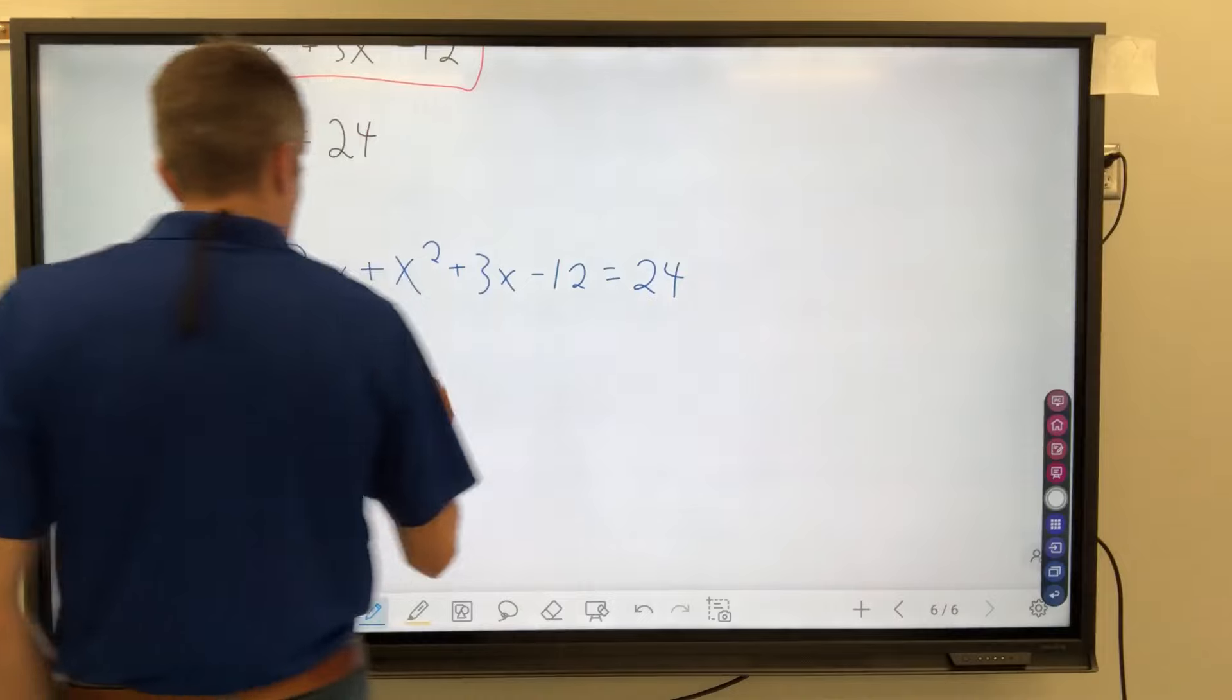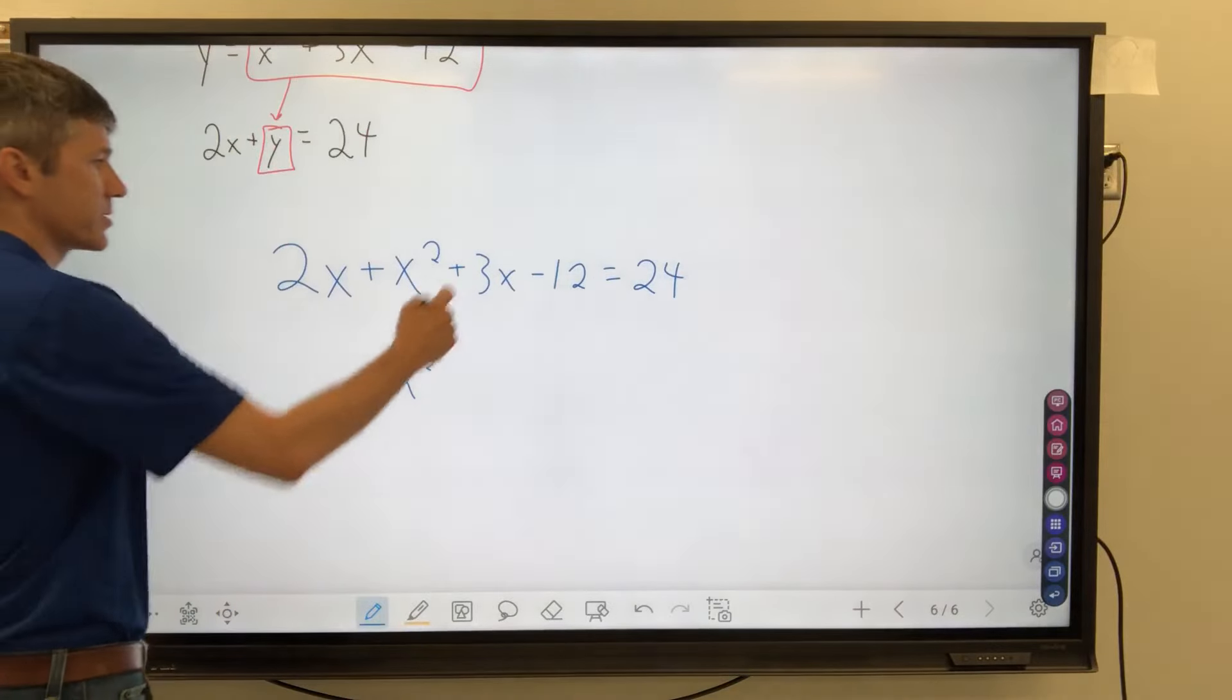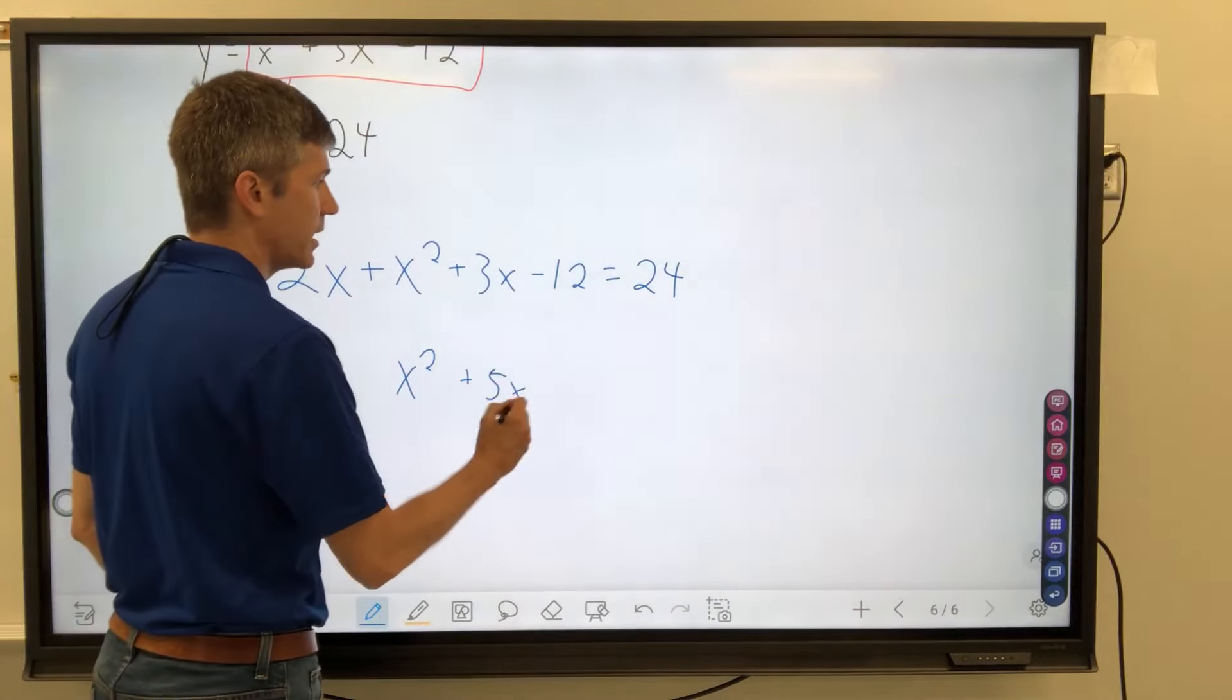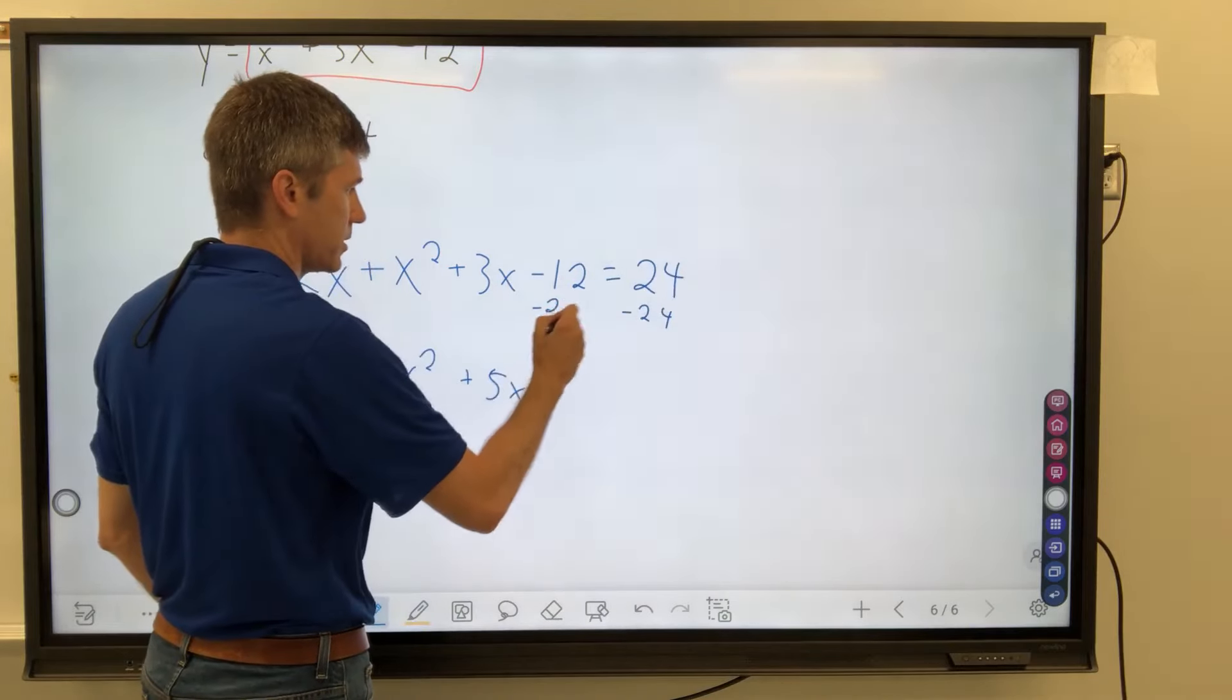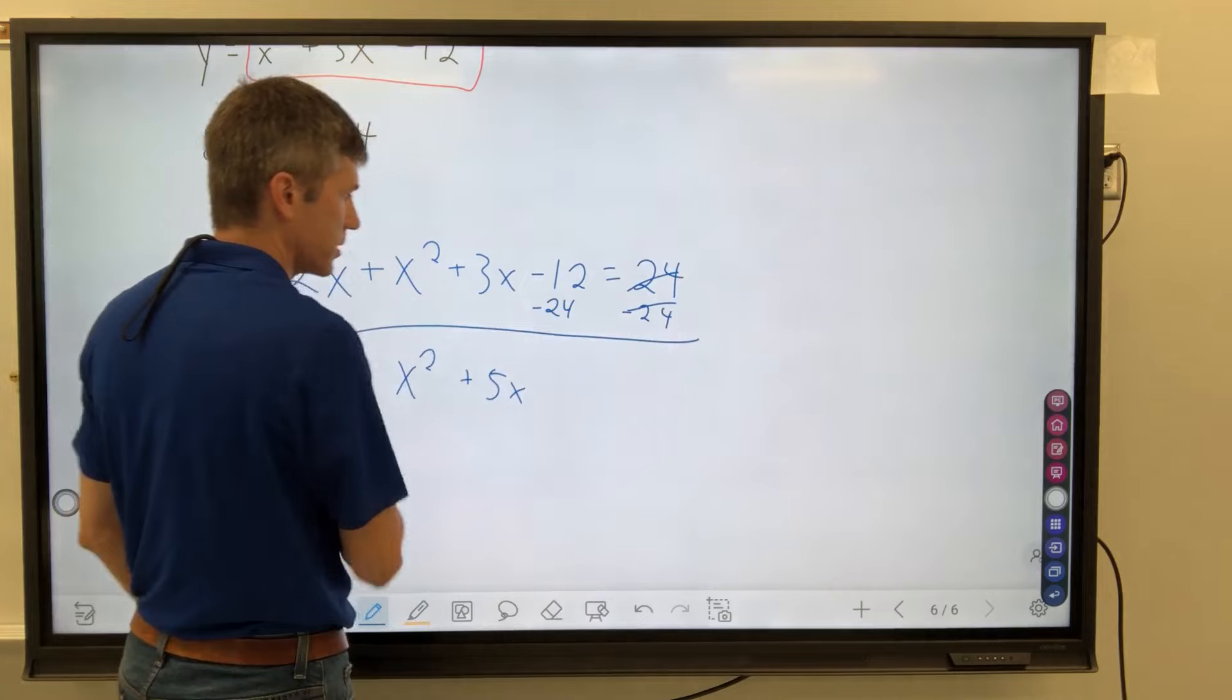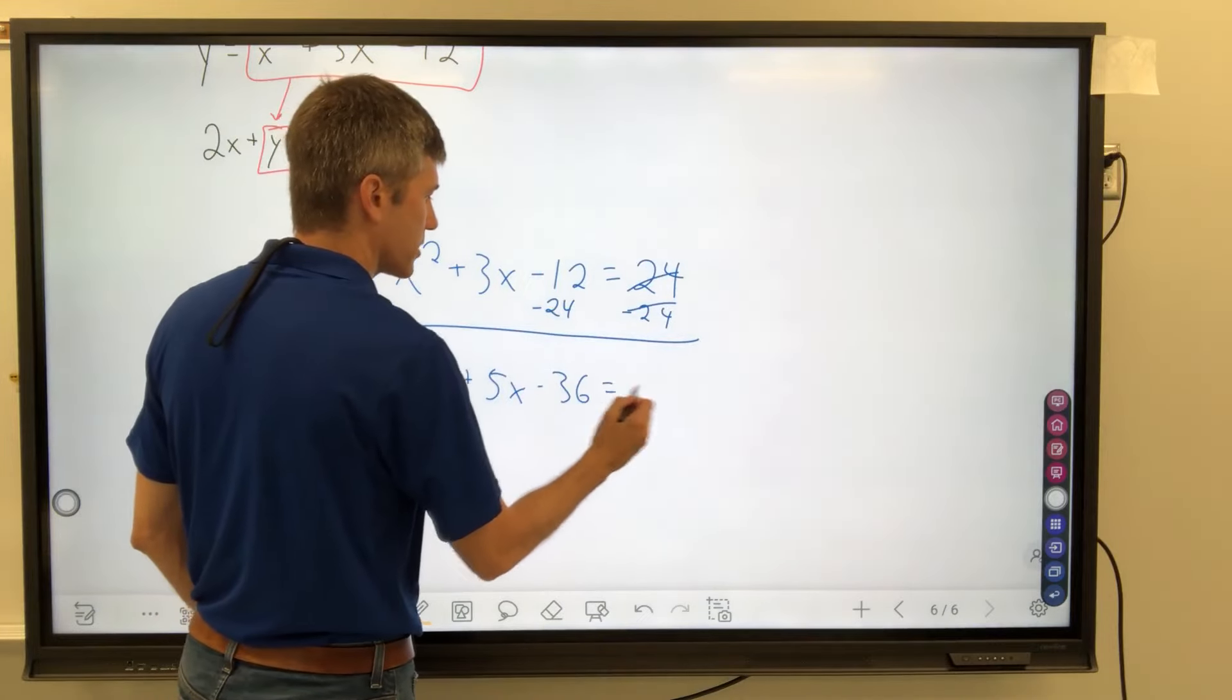What we should do is try to move everything over to one side and then factor. We have x squared on this side. We have 2x and 3x. That's going to make 5x, and then we have 24. We're going to subtract 24. It's on the right side. It needs to be on the left. It needs to join everybody else, so minus 36 equals 0.